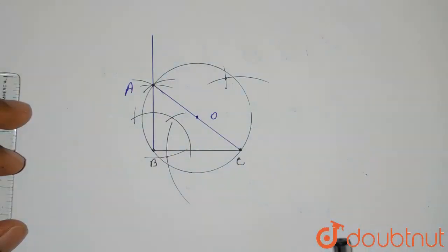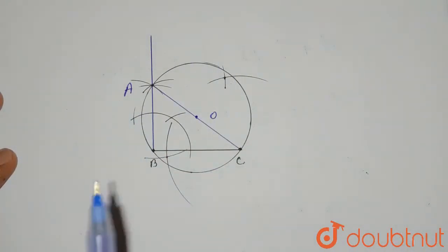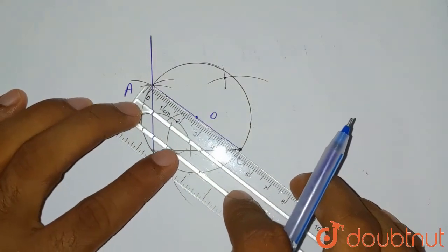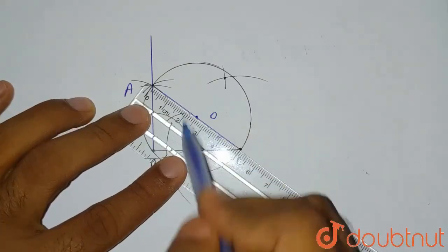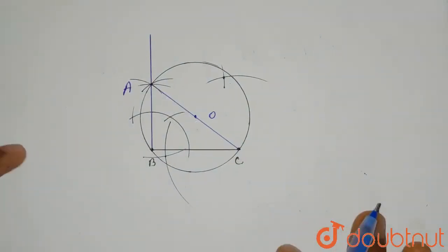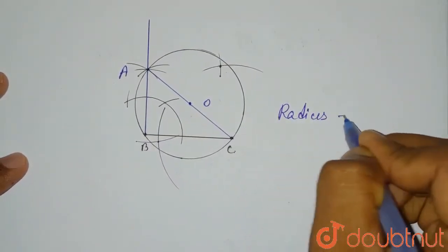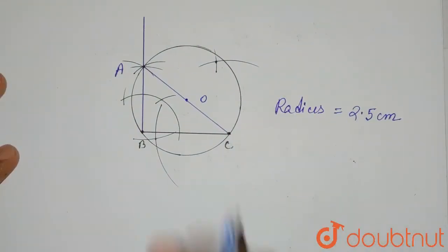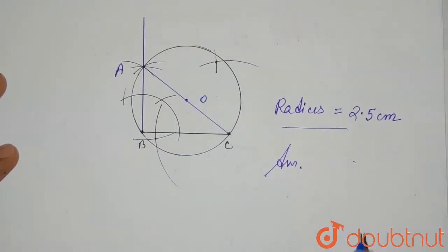So this is how we draw it. We have drawn our triangle first, then we have drawn the circumcircle of it. Now we have to find the radius. We'll place our scale at O and measure to A — it is 2.5 centimetres. So the radius equals 2.5 centimetres. Our construction is completed and we have measured the length of the radius. This is the required solution of this question. Thank you.